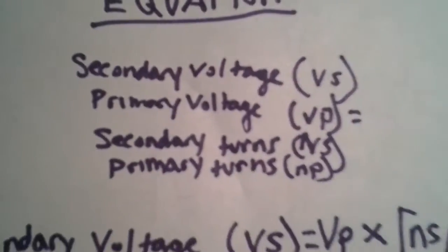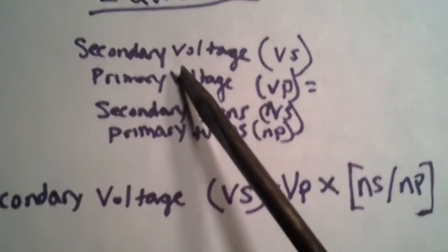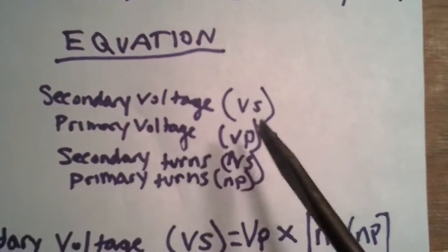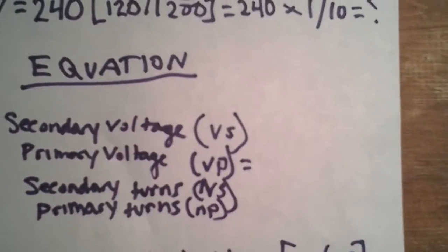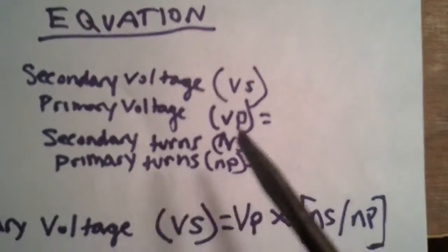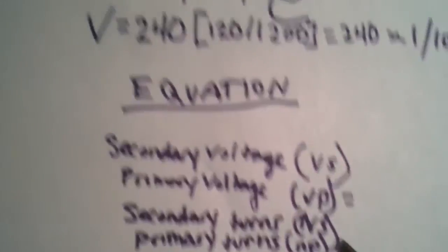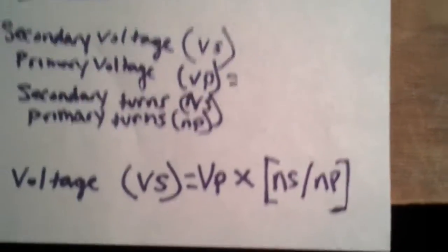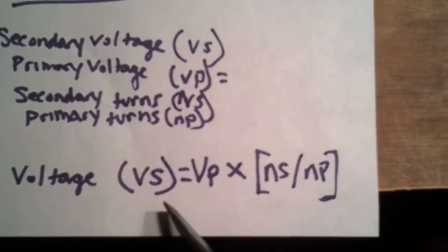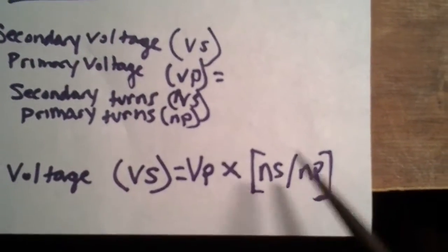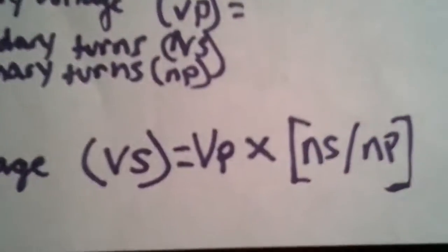The equation here: you have the secondary voltage, represented by Vs. The primary voltage, Vp. Secondary turns, Ns. Primary turns, Np. So the equation you have to know to figure this out would be Vs equals Vp times Ns slash Np. There's your mathematical equation to figure this out.